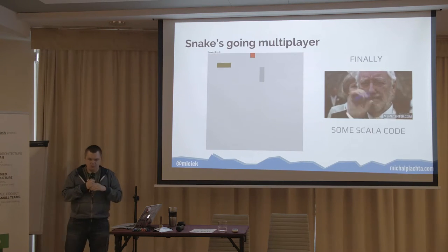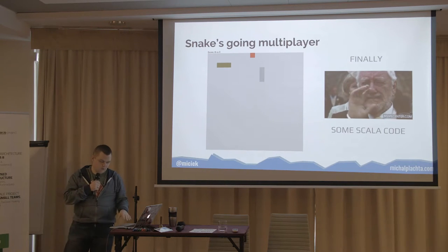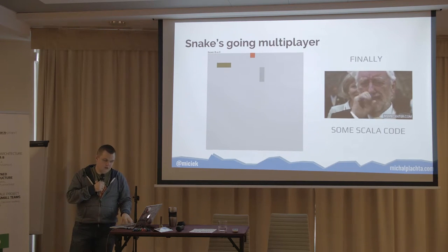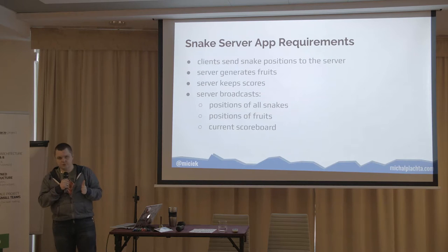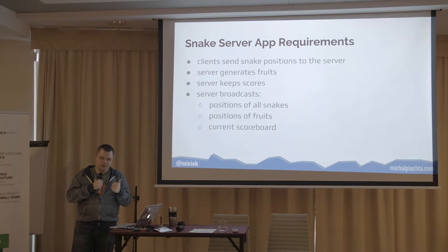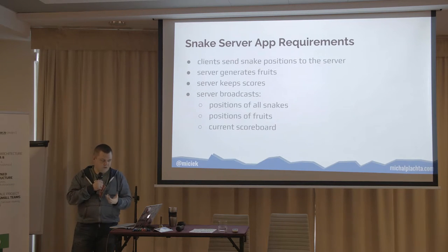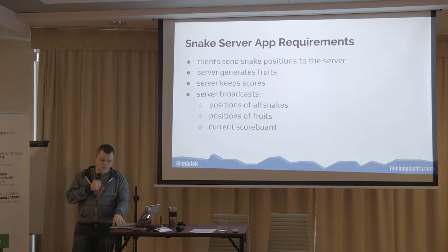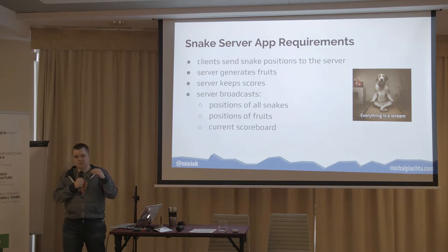Let's go multiplayer. We want to reuse the JavaScript part and just be able to connect as another player — let's do a two-player implementation for now using Scala and Akka. Requirements for the snake server: clients need to send their position and name to the server. The server needs to generate new fruits so everybody knows which is the current one. The server keeps scores for each player and also needs to broadcast them. I will use streams to implement all those requirements.